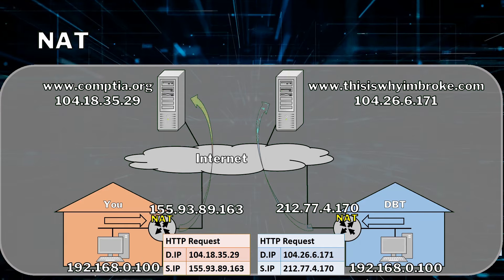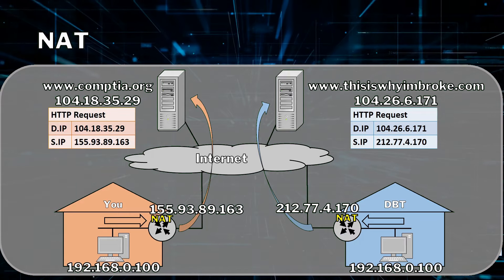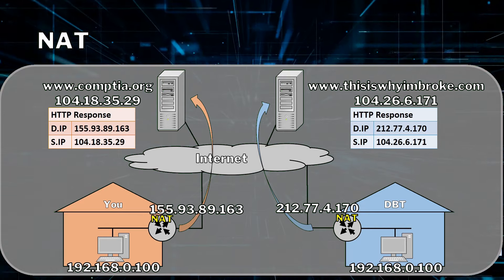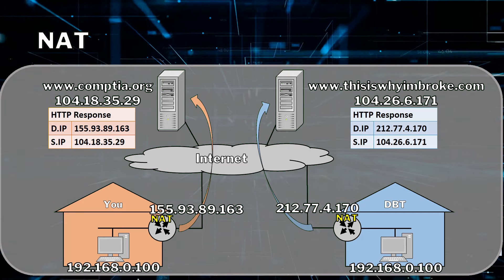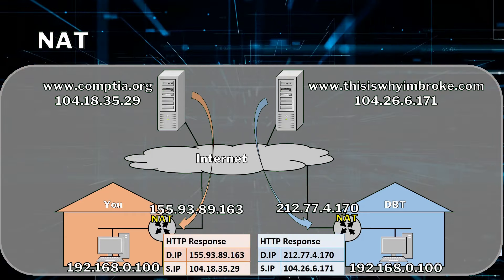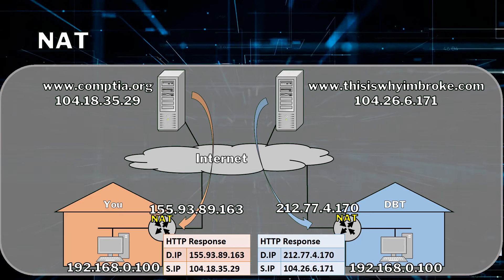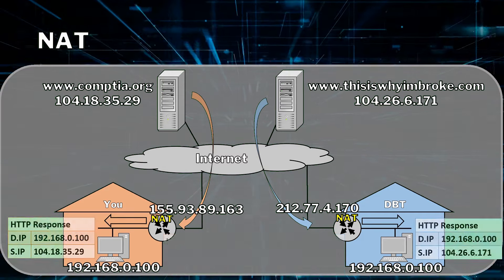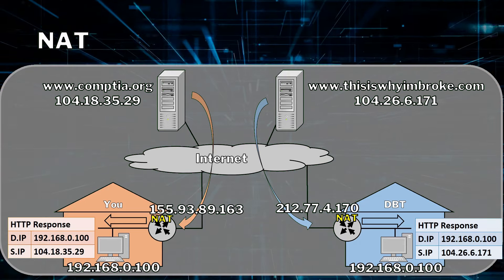Our routers can comfortably forward those requests onto the internet, and they make their way to the relevant web servers. Obviously they want to generate their responses to us, which means everything's going to swap around — source IP is the web server's IP addresses. The destination IP address for the CompTIA response is 155.93.89.163, which is your public IP address, and the destination IP for my response is 212.77.4.170. Those responses make their way back, and the NAT service on your router and my router both know that they did a translation and they know they're not the ones that asked for the websites. So they're going to clear out the IP addresses from the destination field, put the 192.168.0.100 addresses back in, and let them into the LAN — which means you get the response you wanted, and I get the response I wanted, and no problems occurred.